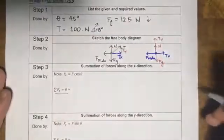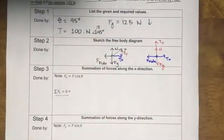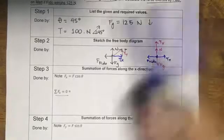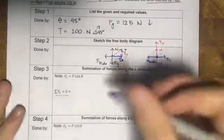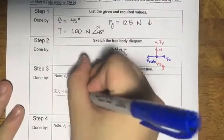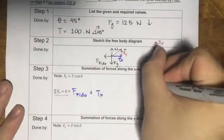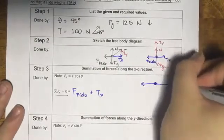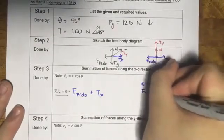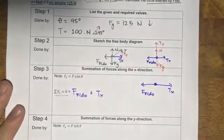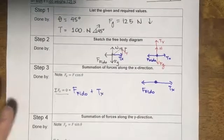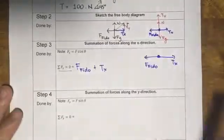Okay, so in the x, what do you have in blue? Let's use blue again just to keep the colors going. We have F of Fido and Tx, because as we have drawn, F of Fido goes this way, Tx goes that way. So F of Fido plus Tx.